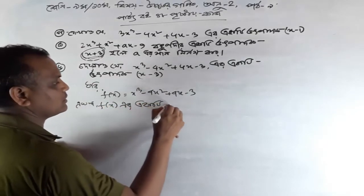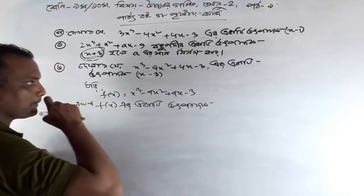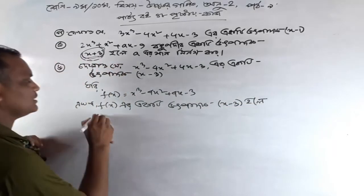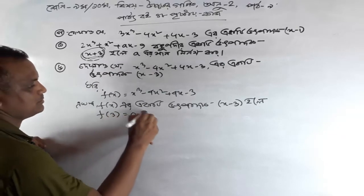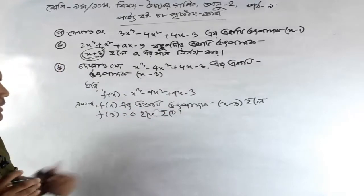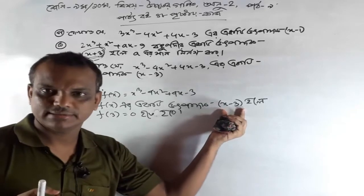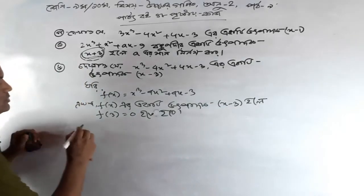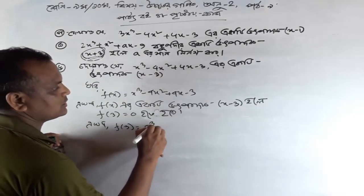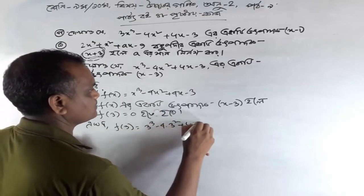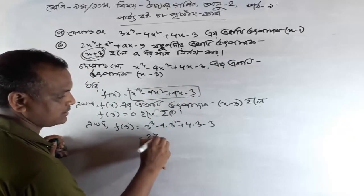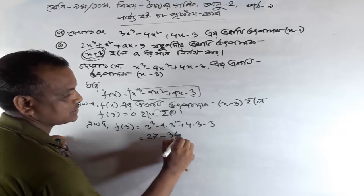So we are going to take you back. Thank you so much for coming. From this step, x minus 3 is equal to 0. 0 is equal to 0. F of 3 is equal to 0. F of 3 is equal to 3, and F of 4 is equal to 0.